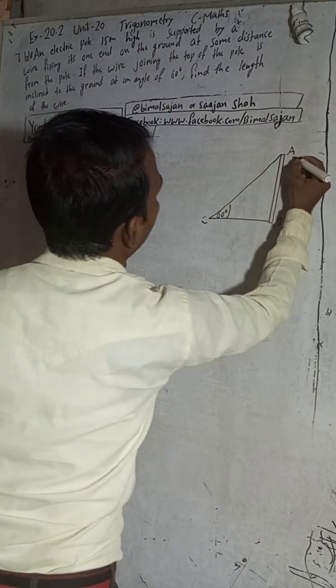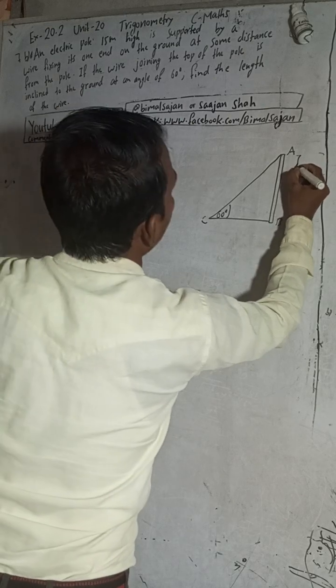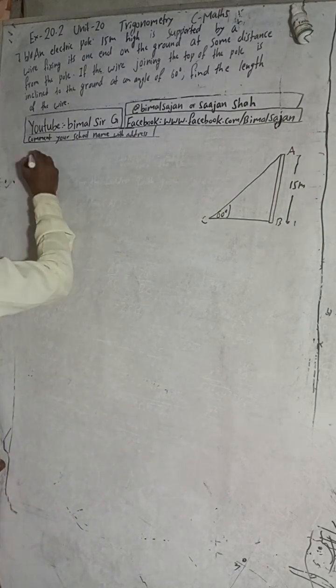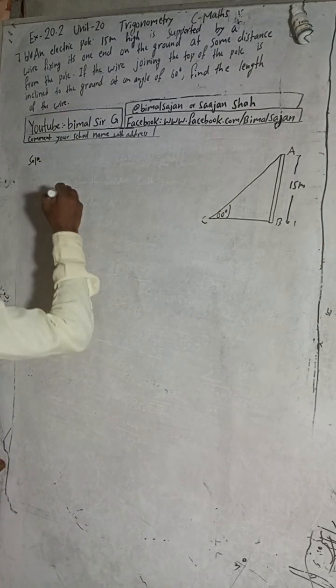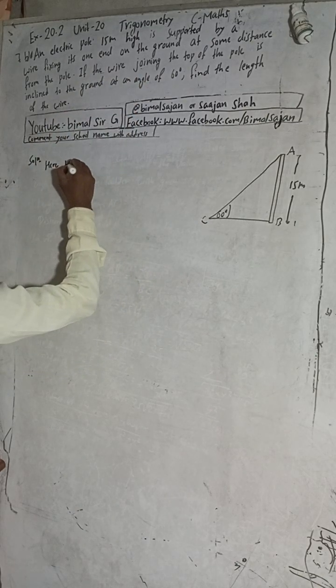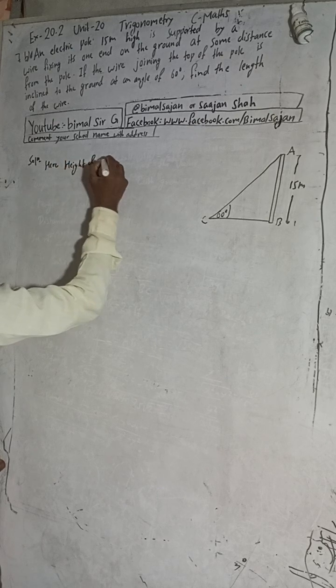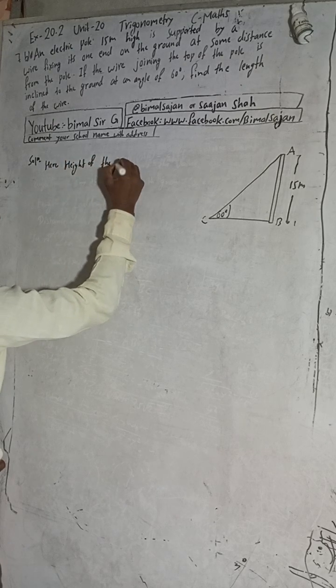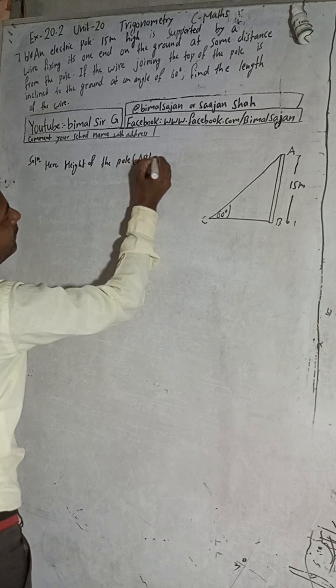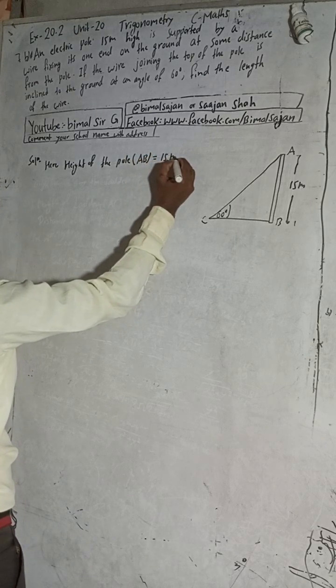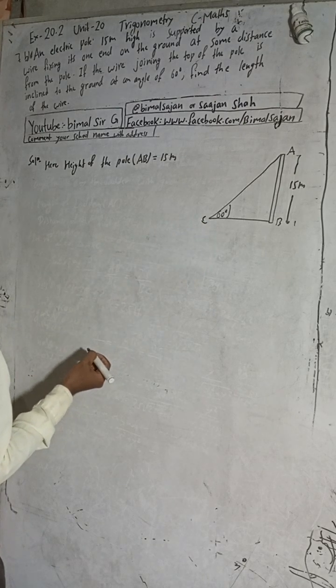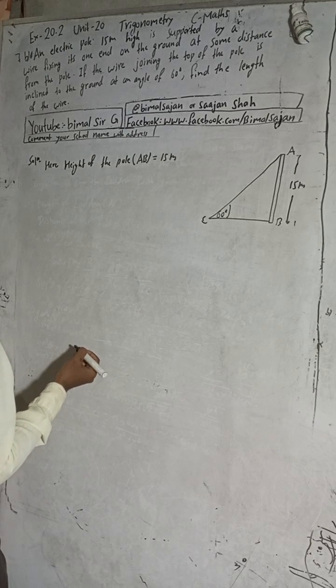Height of the pole AB is given as 15 meters, that is 50 meters. And AC is the wire. We need to find the length of the wire, so length of the wire is AC.